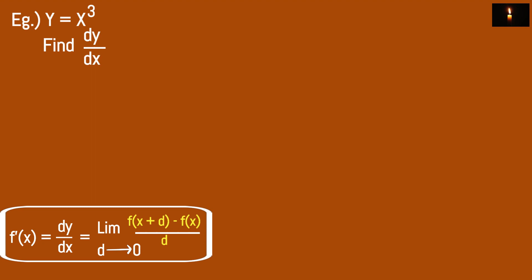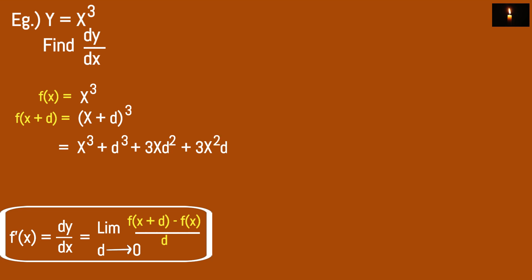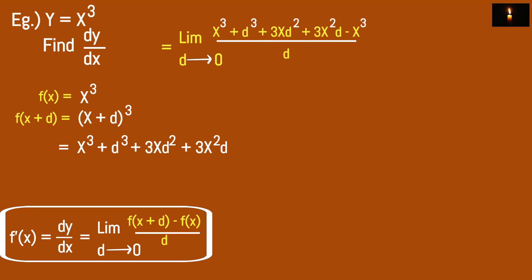Now let's differentiate x cubed. So f(x plus d) is (x plus d) cubed, and f(x) is x cubed. Expanding (x plus d) cubed gives x cubed plus 3x squared d plus 3x d squared plus d cubed. Using the differential formula with the limit as d approaches zero.